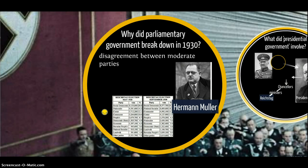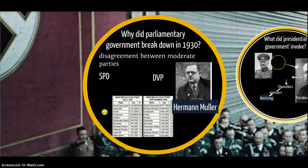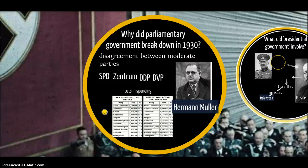Why did parliamentary government break down in 1930? Principally, it was because of disagreement between moderate parties about what to do with the Great Depression — the huge economic problems, the unemployment and so on. In 1930, Germany was ruled by a coalition. Hermann Müller was the chancellor, and it was a coalition of the Social Democrats, the German People's Party, the German Democratic Party, and the Catholic Centre Party, Zentrum. This coalition of four parties broke down in 1930, basically because they disagreed about what to do about the financial crisis.